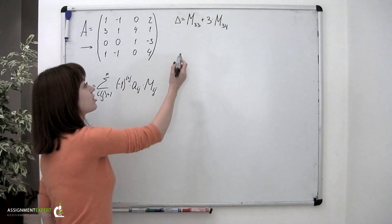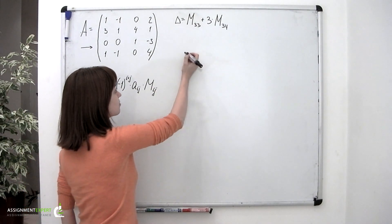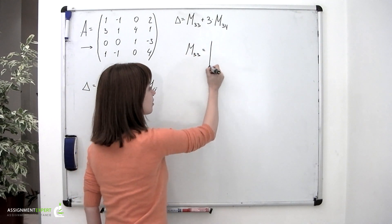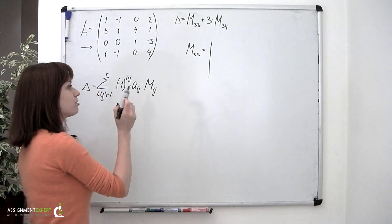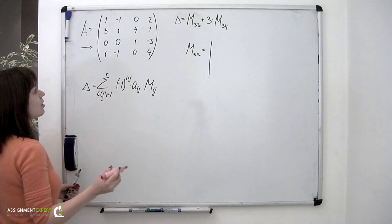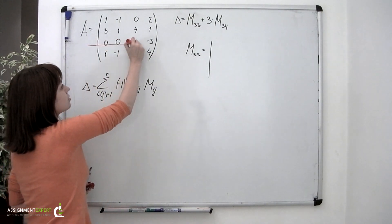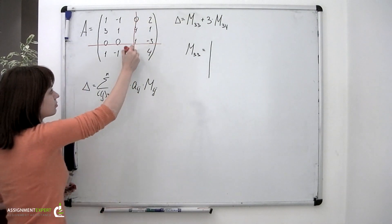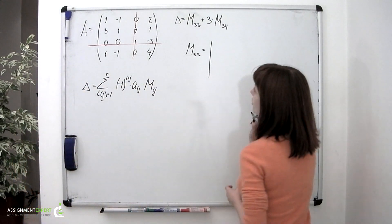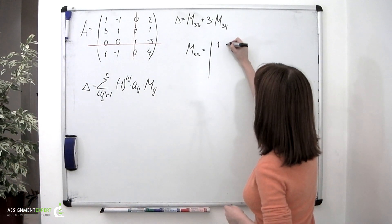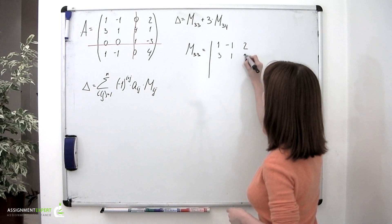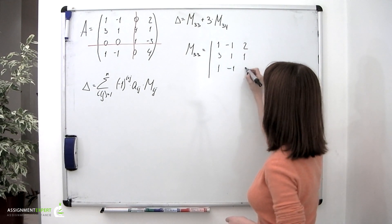Let's begin with minor M sub 3,3. M sub 3,3 is the determinant of the matrix formed by crossing out the third row and third column from the initial matrix. The resulting 3×3 matrix has entries: 1, negative 1, 2, then 3, 1, 1, then 1, negative 1, and 4.